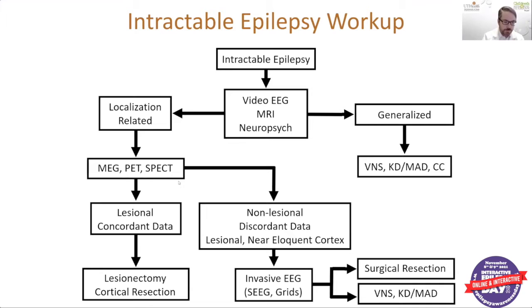The goal of these additional studies is to try to determine whether your epilepsy is considered lesional, meaning that we can see an abnormality on neuroimaging. And is the data obtained — including EEG, MRI, MEG, PET-SPECT — all concordant, meaning they all point to relatively the same area of involvement where all the epilepsy activity is coming from.